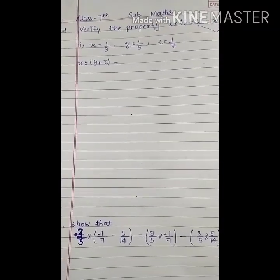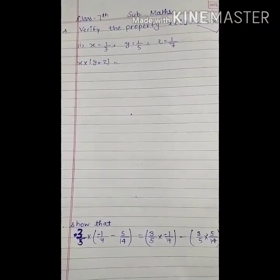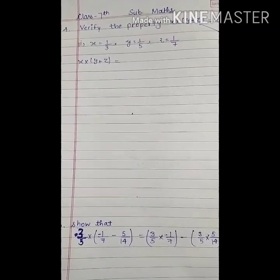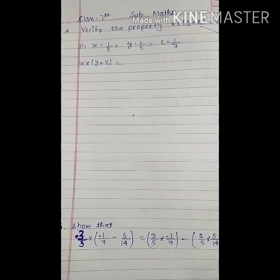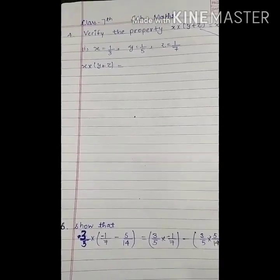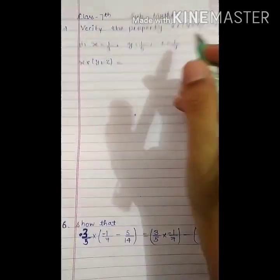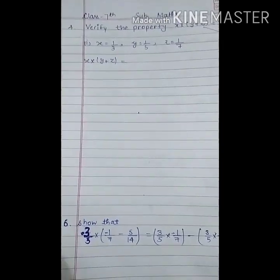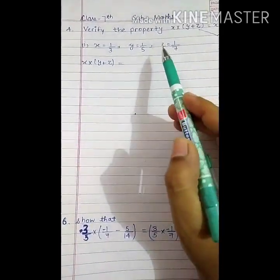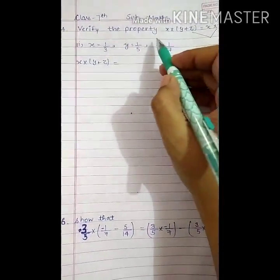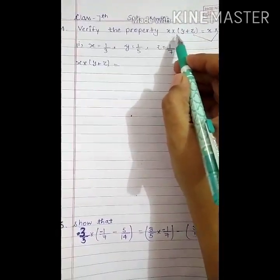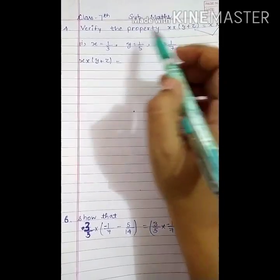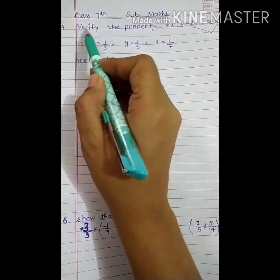Good morning students. Welcome to mathematics class, Class 7th. Today we proceed with question number 4 of worksheet 3 — multiplication of rational numbers. Question 4 is: